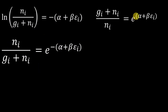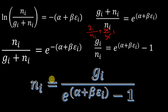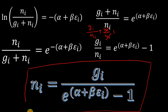Now let us flip this over — the minus sign changes and (g_i + n_i) comes to the numerator. We split this as g_i/n_i + n_i/n_i, which is 1, so that 1 becomes a minus 1 on rearrangement. Rearranging further, n_i goes to one side and the whole exponential term goes to the denominator, giving us n_i = g_i divided by (e raised to alpha + beta*e_i, minus 1). This is the Bose-Einstein distribution law. The Lagrange multipliers alpha and beta are still unknown.